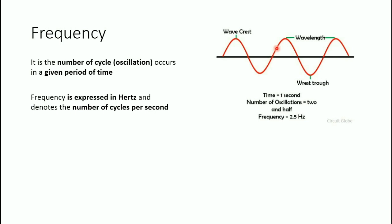At that point, the waveform repeats — that is the beginning of our second cycle. It rises again to the maximum point, returns to zero, goes down to the lowest point, and returns to zero. So we have two cycles and a remaining half wave. Overall, the cycles within one second are two and a half. From the definition, frequency is the number of cycles per second, so our frequency is 2.5 hertz.